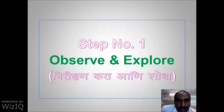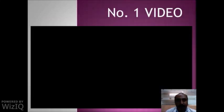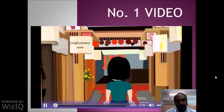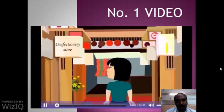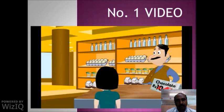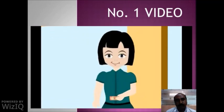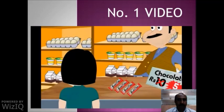Step 1: Observe and Explore. In this step we will see a video. Gonika went to a confectionary store and got to know that the price of her favorite chocolate has been reduced by Rs. 5. She had Rs. 20 with her, so she bought 4 chocolates instead of 2.